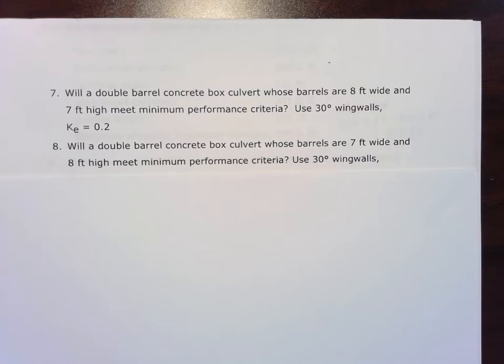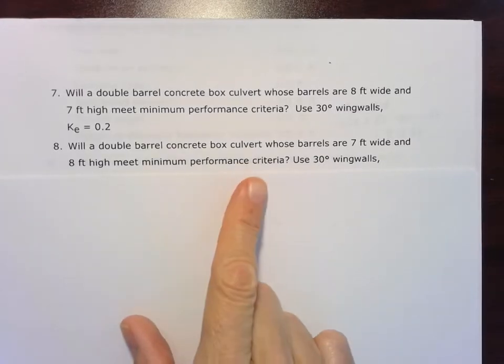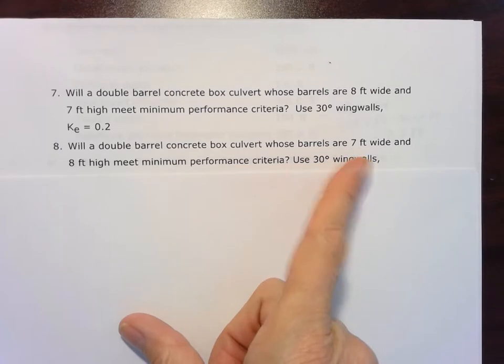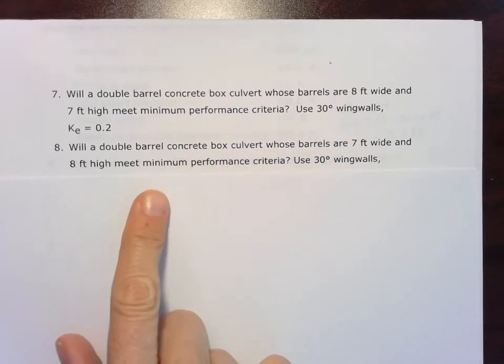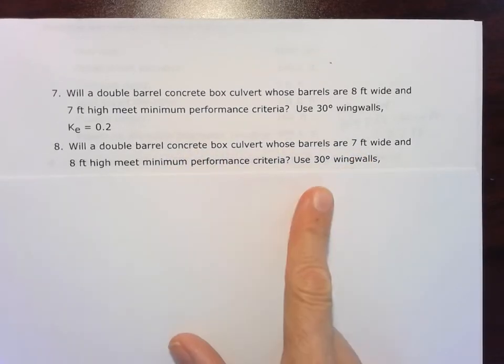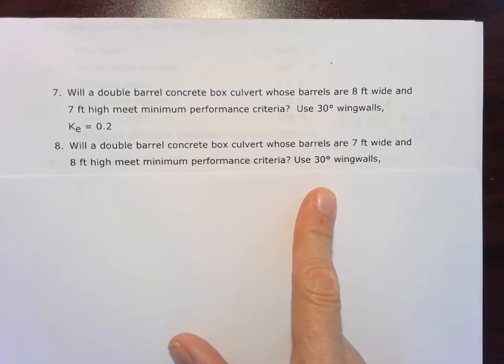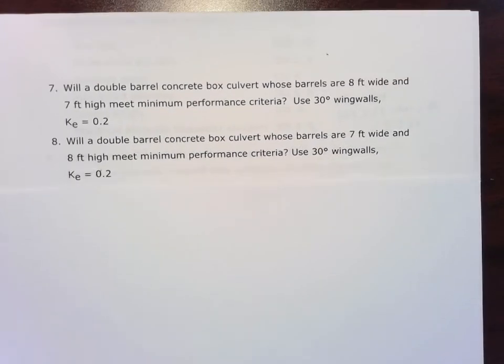Alright, for the last problem, problem 8 of the chapter 5 hydraulics homework, we're going to solve if a double barrel concrete box culvert whose barrels are 7 feet wide and 8 feet high will meet minimum performance criteria. We'll use 30 degree wing walls and KE of 0.2.